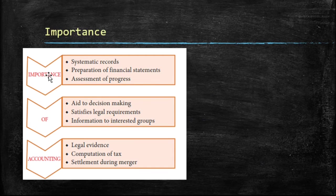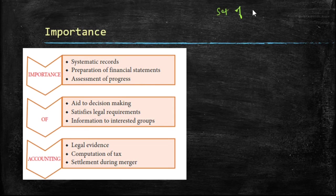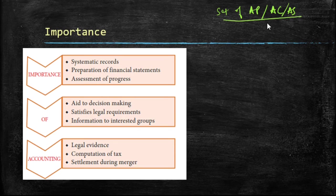When we talk about the importance of accounting, we observe that it helps us to maintain systematic records of all the financial transactions. When we say systematic records, it means there is a proper set of accounting policies, accounting concepts, and accounting standards which are maintained while recording these financial transactions in the books of accounts.